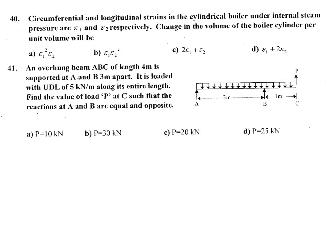Hello friends, welcome to my channel. This is ISRO question paper from 2006 to 2016, strength of materials part 4. The question is: circumferential and longitudinal stress in the cylindrical boiler under internal steam pressure are epsilon 1 and epsilon 2 respectively. Change in the volume of the boiler cylinder per unit volume. This question was already discussed in my previous video.